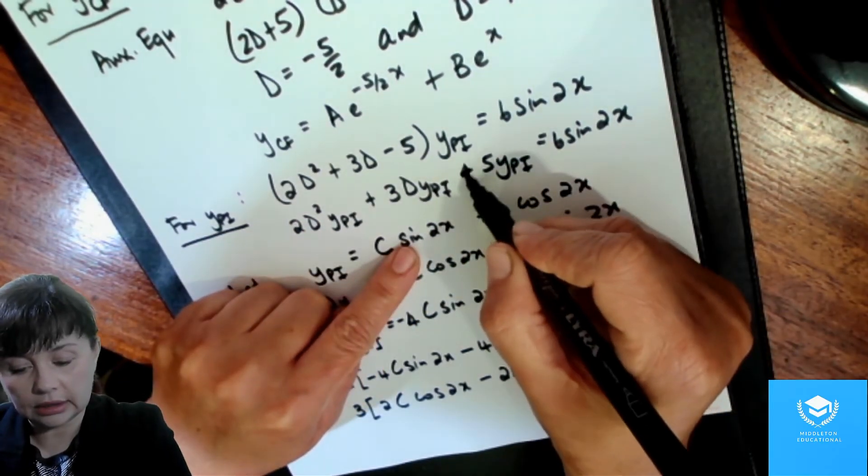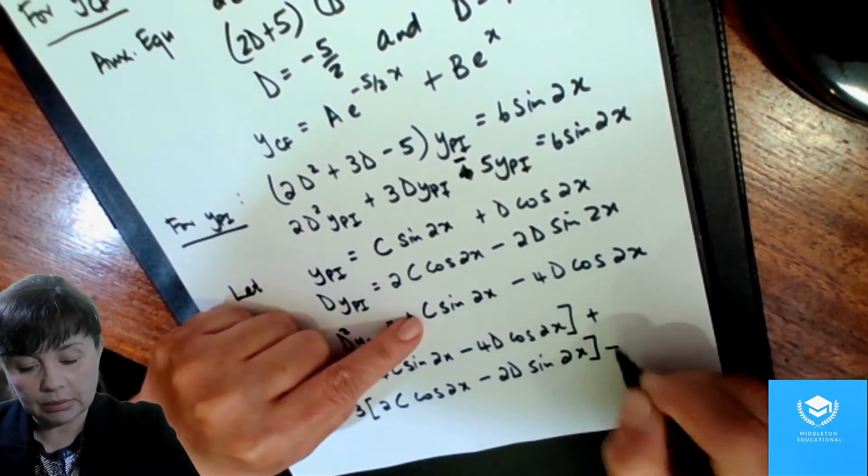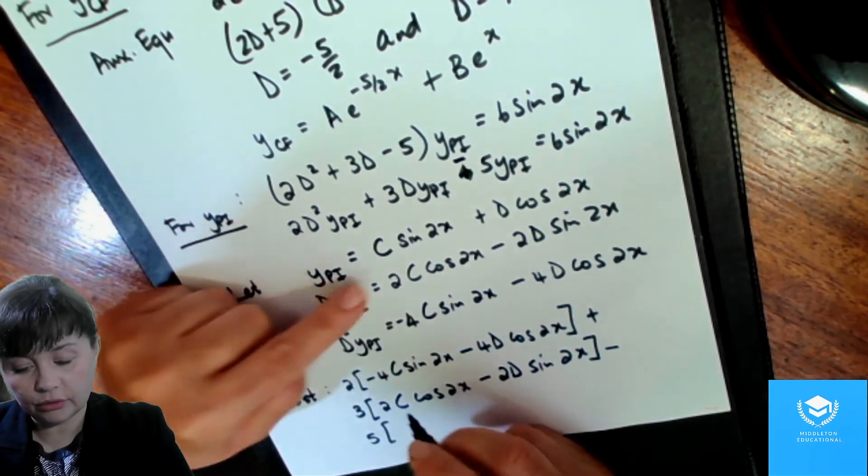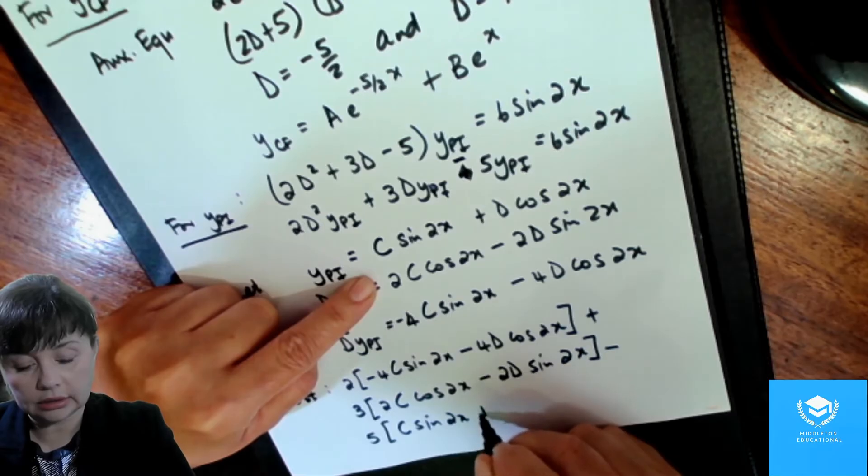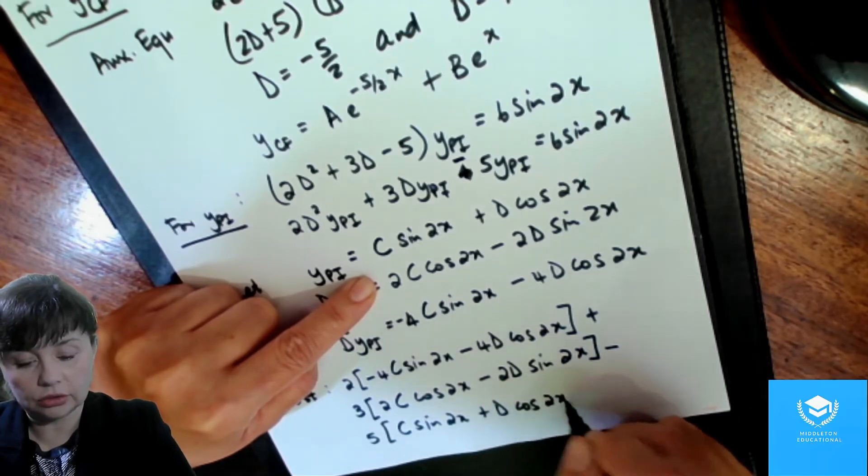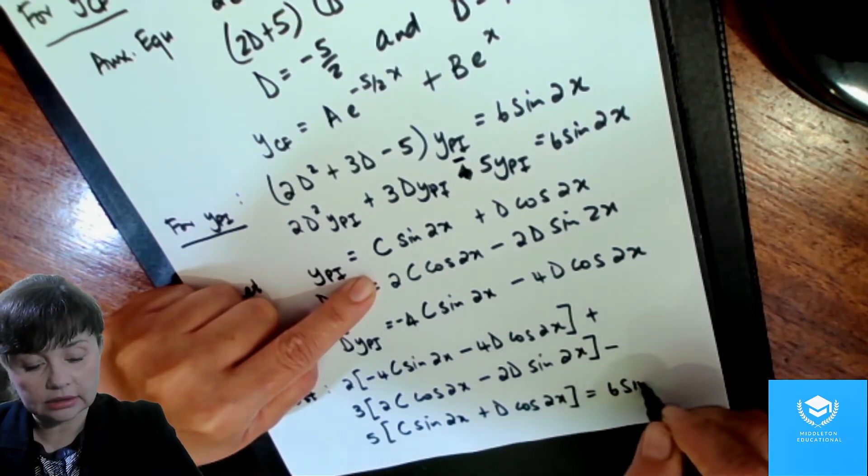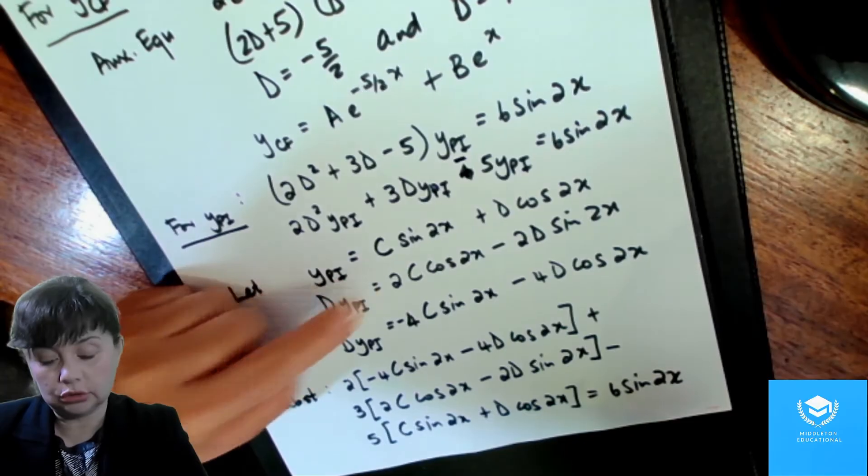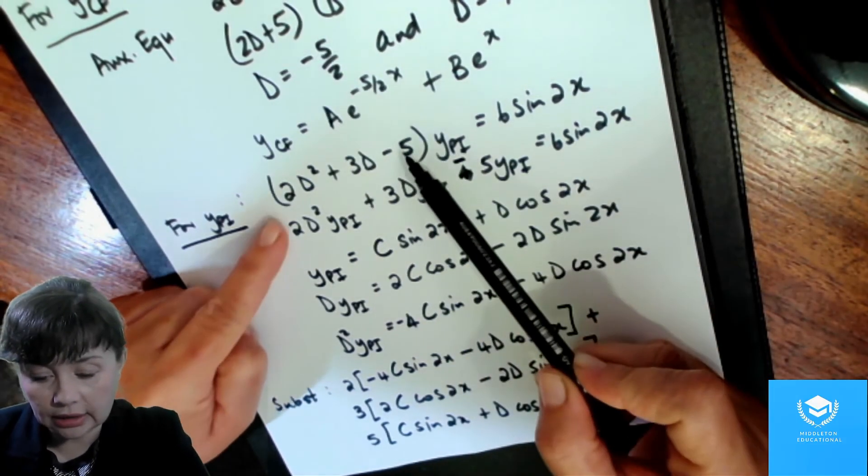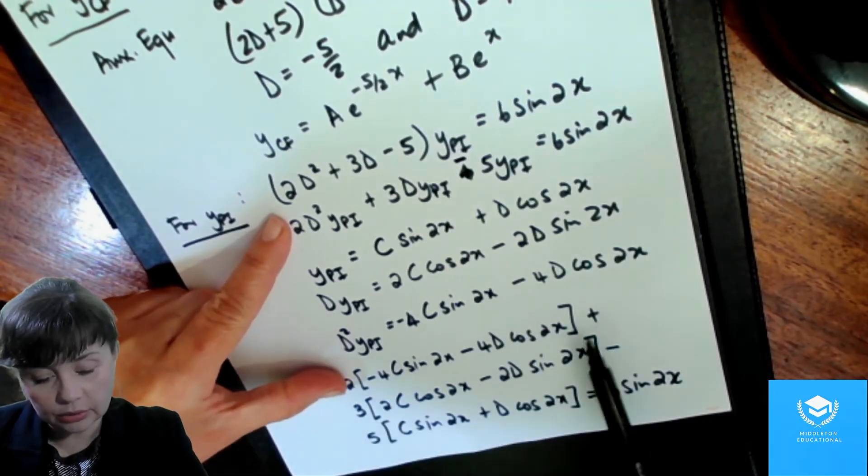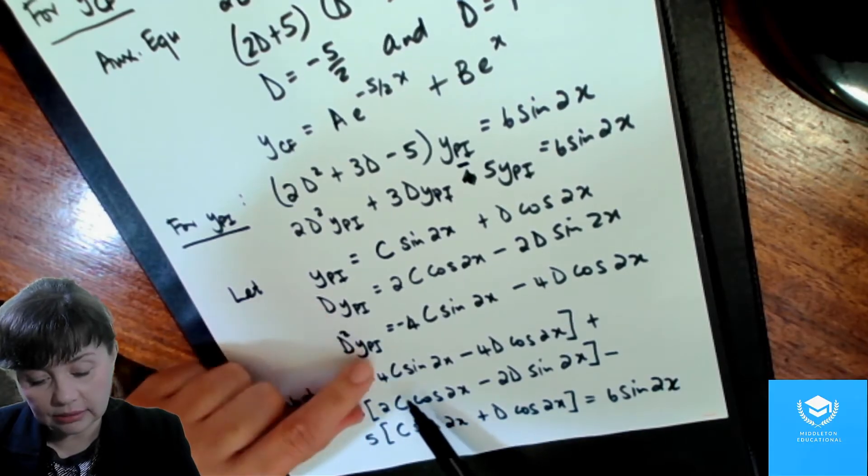Plus 3 times 2c cos 2x minus 2d sine 2x. And then it is, oops, mistake here, that must be a minus, not a plus. And then it would be minus 5c sine 2x minus 5d cos 2x. And that has to equal 6 sine 2x. And we just make sure that we substitute it correctly. Yes, we've got plus 3, we've got all of our terms in the right places.